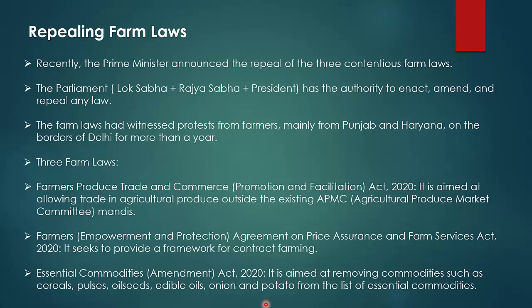Why were farmers protesting? Farmers from Punjab and Haryana were scared that the middleman system would close and they would lose authority. The other concern was that after removing essential commodities, farmers feared the government would close the Minimum Support Price (MSP). After many rounds of communication and meetings with farmer unions, the government assured that MSP would not be closed and procurement on MSP would continue.